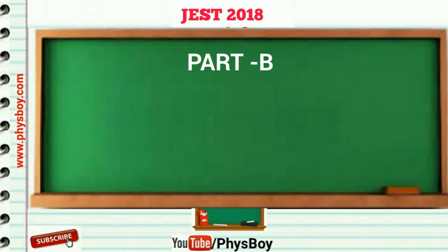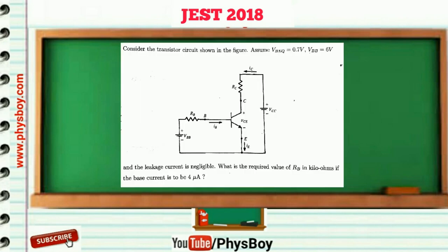In this video I am going to solve only the transistor circuit problem from Part B JEST 2018. The question was: consider the transistor circuit shown in this figure. Assume VBE is equal to 0.7 volt and VBB is equal to 6 volt, and the leakage current is negligible. What is the required value of RB in kilo-ohms if the base current is to be 4 micro-ampere?